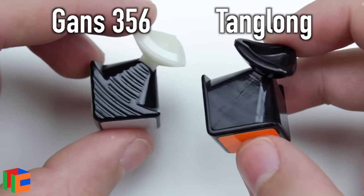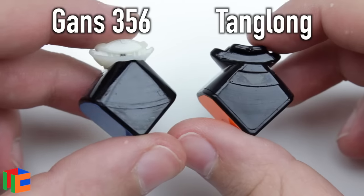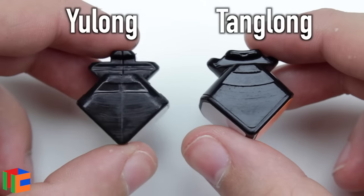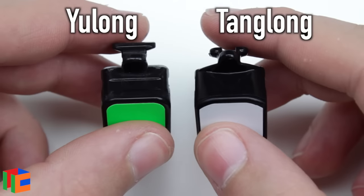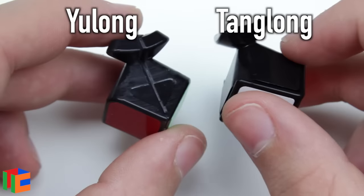Looking at the mechanism, the Tang Long definitely has its resemblances to the Gans 356, but it actually more closely reminds me of another older cube and a previous main of mine, the Yulong. Upon closer inspection of the mechanism, I realized how simple and minimalistic the design of the Tang Long is, and I always love these designs.